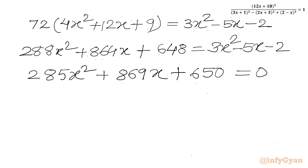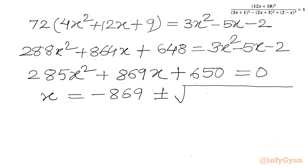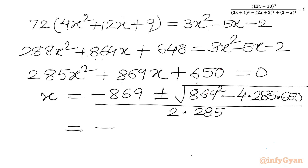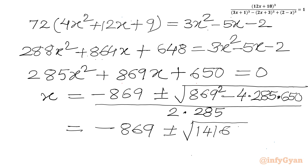Now we have to apply the quadratic formula. So x equals minus b, which is minus 869, plus or minus the square root of b squared — 869 whole square — minus 4 times a times c, where a is 285 and c is 650, all divided by 2 times a, which is 2 times 285, giving 570. Simplifying under the square root, we get 14161.